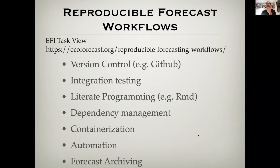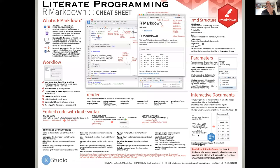One of the things that can make a workflow reproducible is this idea of literate programming. We've already encountered literate programming because R Markdown is an example of it. The idea is having documents that allow you to mix code with text, essentially allowing your reports, papers, webpages, and other documents to be dynamically regenerated in a way that regenerates the figures, the tables, and the statistics.